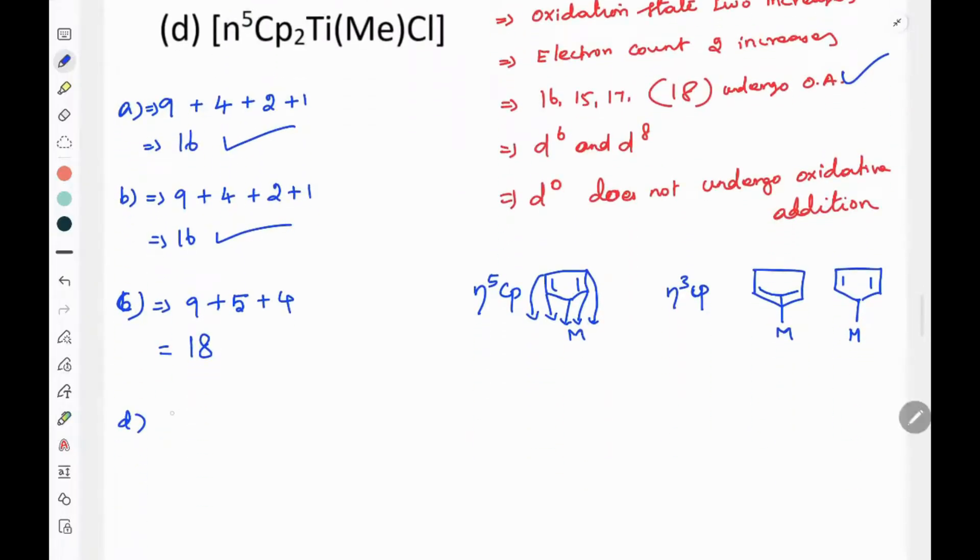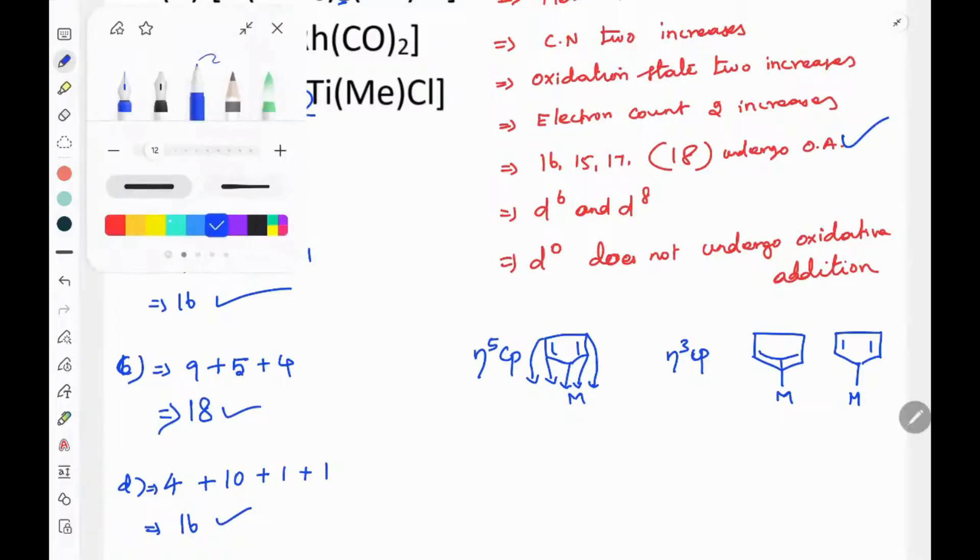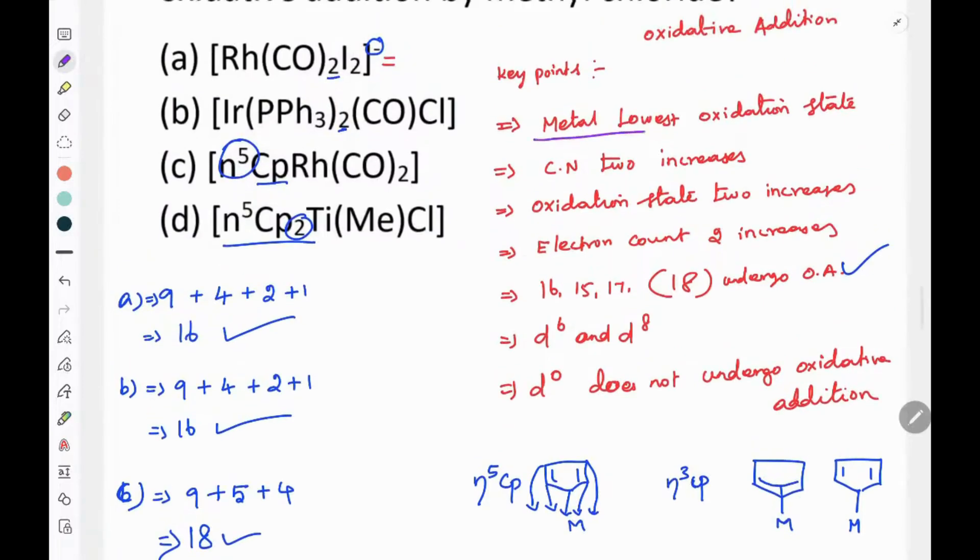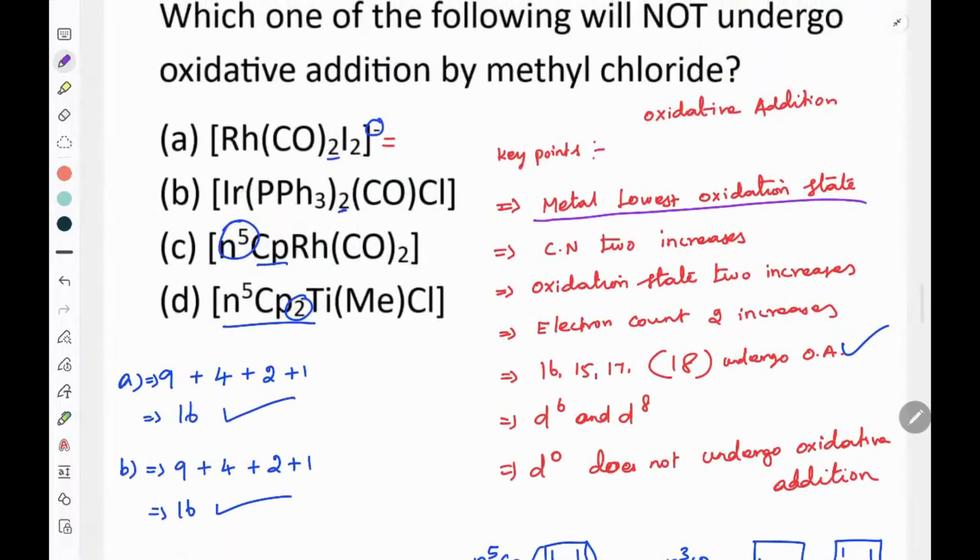Next, option D. Titanium metal has a valence of 4. Here we have two Cp ligands - Cp2. Each is eta-5, so 2 times 5 is 10. Plus one titanium-methyl bond, that's 1 electron. Plus one chlorine is 1. So 4 plus 10 plus 1 plus 1 equals... this is 14. So this one has a low oxidation state.